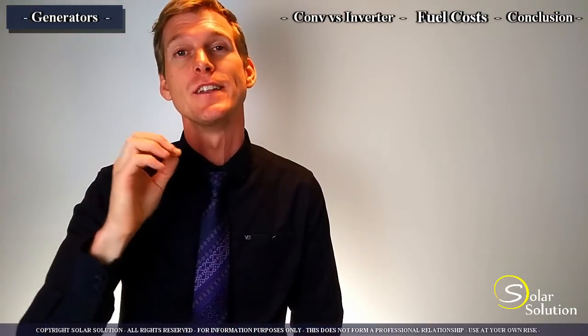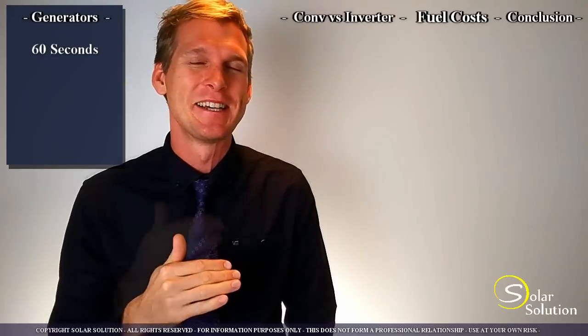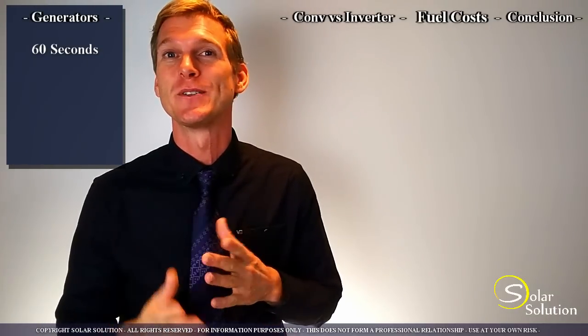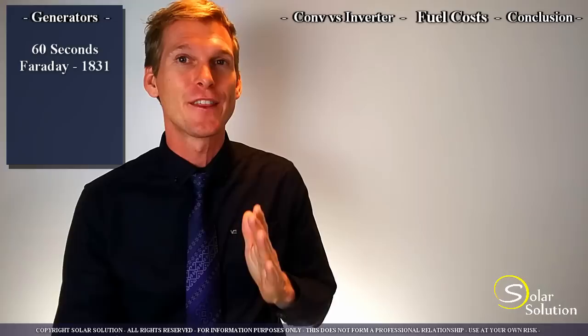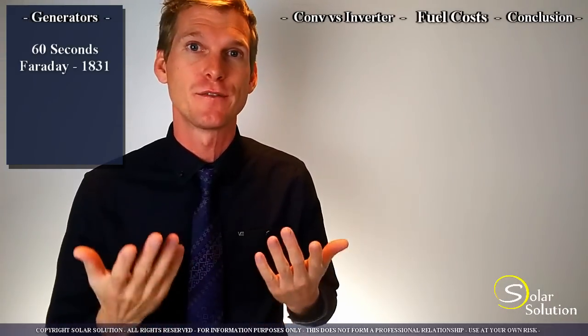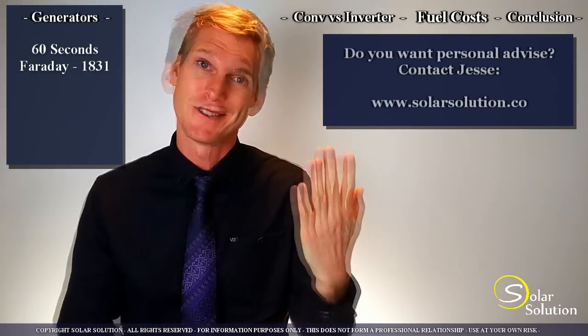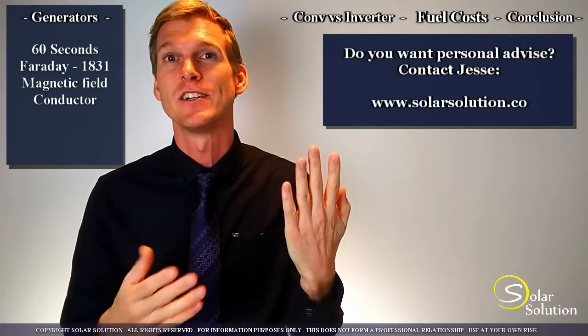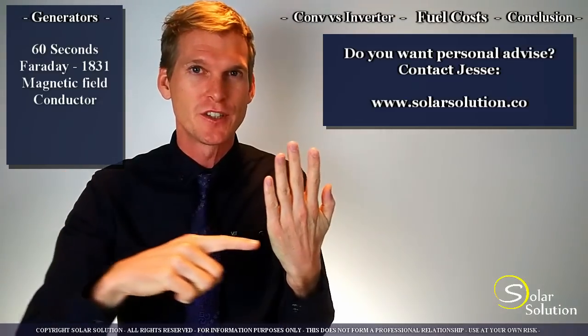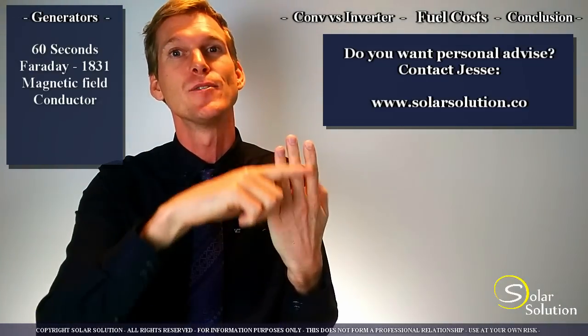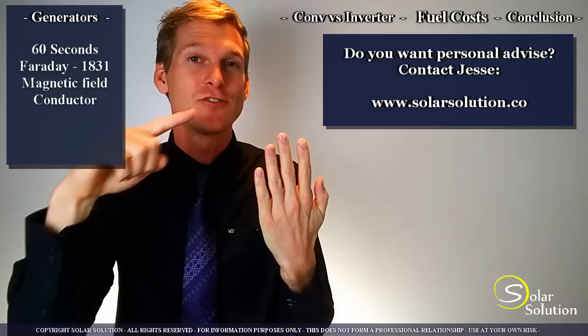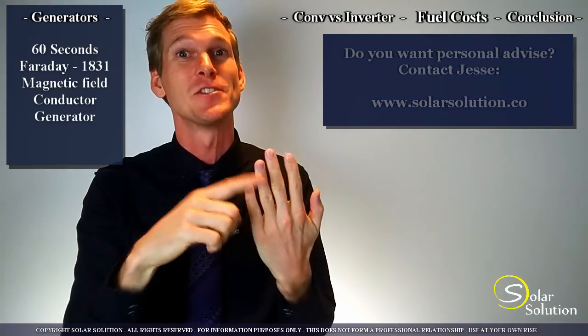So let's start by looking at the generator basics. I'm going to try to explain this to you in less than a minute. It started with this Englishman called Michael Faraday in 1831. He figured out something which is now referred to as Faraday's law. Basically what it says is that if you take a magnetic field and something that conducts electricity such as a copper wire and you move the copper wire through the magnetic field, you have created an electric generator which makes electricity.